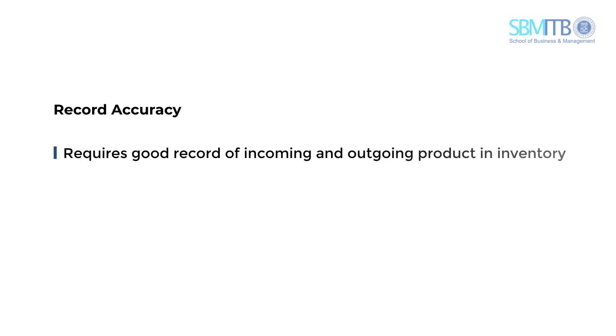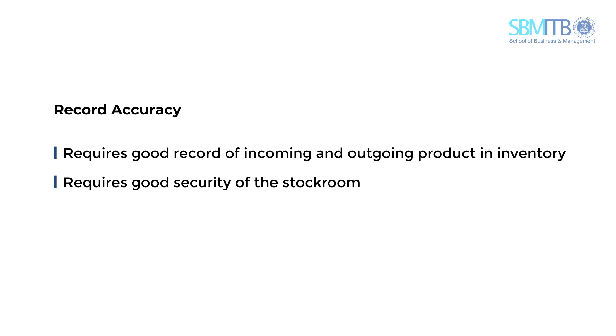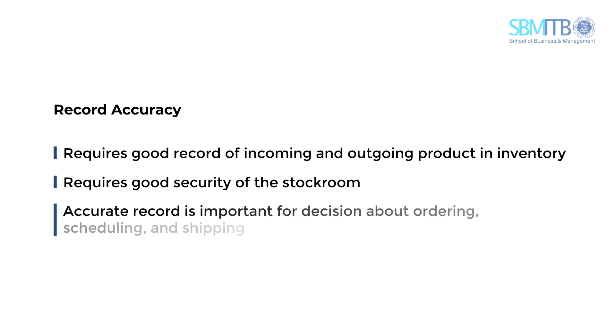Another important aspect of managing inventory is record accuracy. Record accuracy requires good records of incoming and outgoing products in inventory, as well as good security of the stock room. A company needs accurate records because important decisions about ordering, scheduling, and shipping are made only when the firm knows what it has on hand.